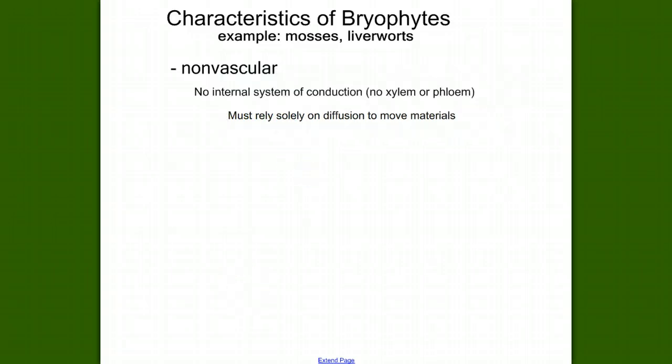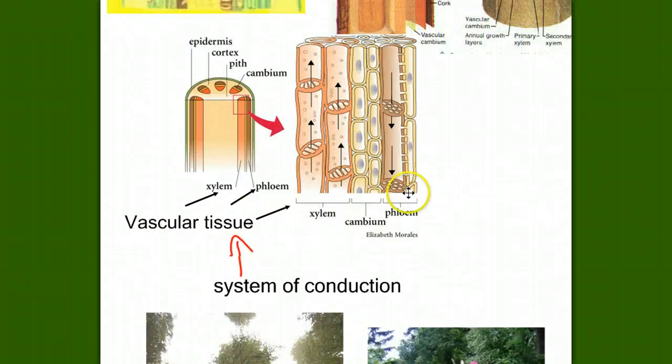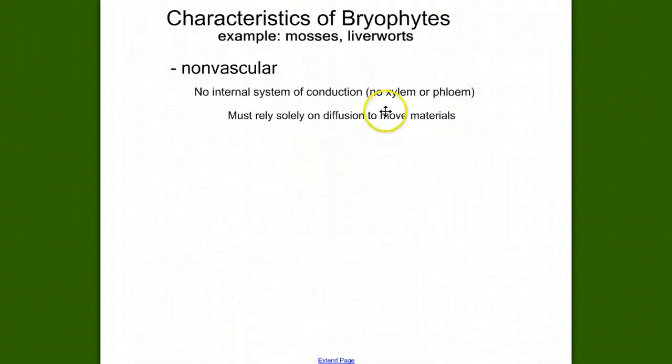In what ways does that limit mosses? What does vascular tissue provide for plants? This internal system of conduction is an efficient way to move materials throughout the plant body. How do you accomplish this movement without vascular tissue? The answer is diffusion. Is diffusion efficient over great distances? No.